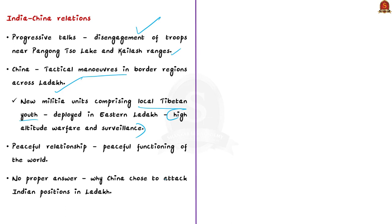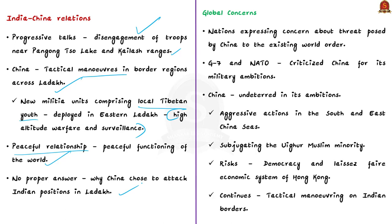India and China are two Asian giants sharing a several-thousand-kilometer land border, making peaceful relations essential for world peace. We still lack a clear answer as to why China chose to attack Indian positions in Ladakh last year without any provocation, causing the deaths of many soldiers. Today, even other nations are expressing concern about China's threat to the existing world order — both the G7 and NATO have criticized China for its military ambitions. Yet China continues aggressive actions in the South China Sea, East China Sea, Xinjiang, Hong Kong, and along India's borders.